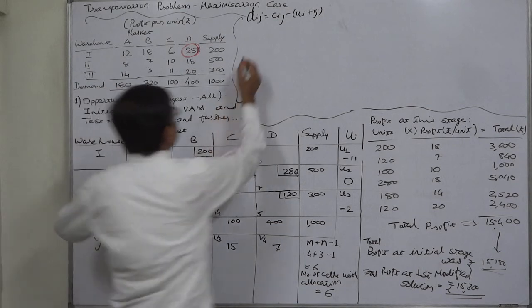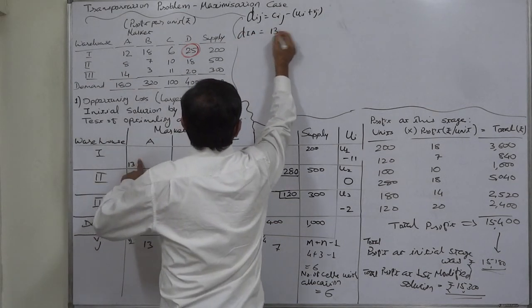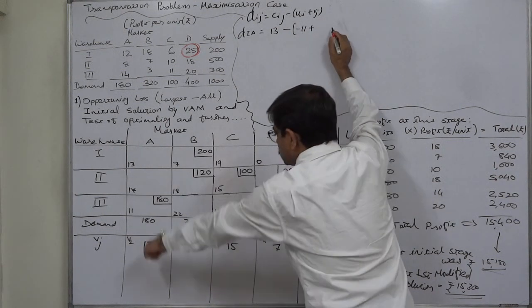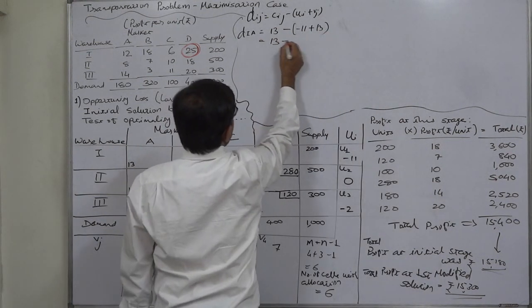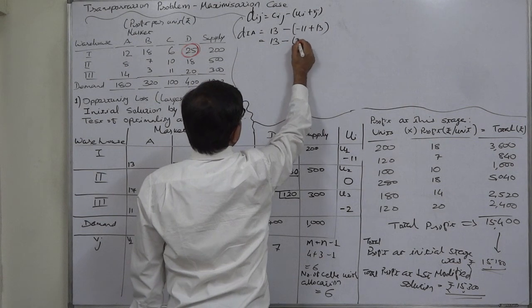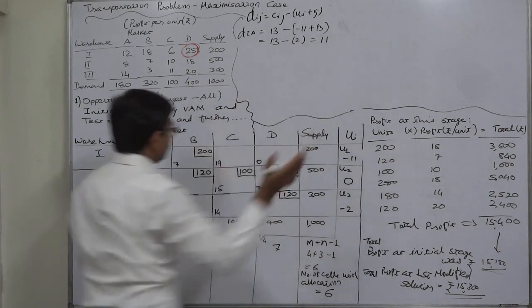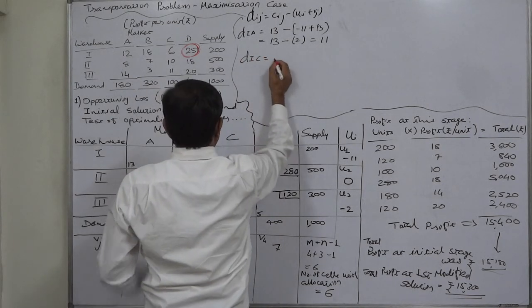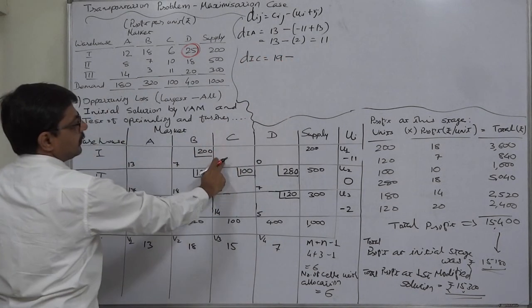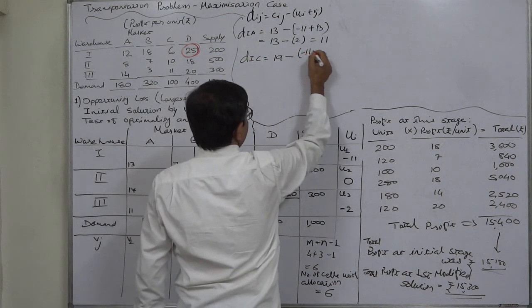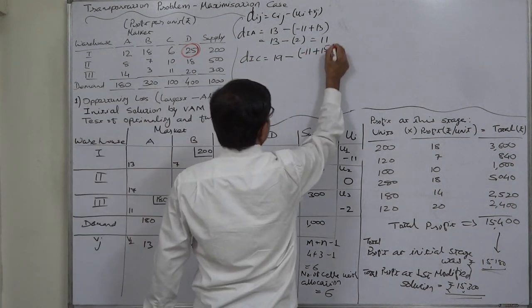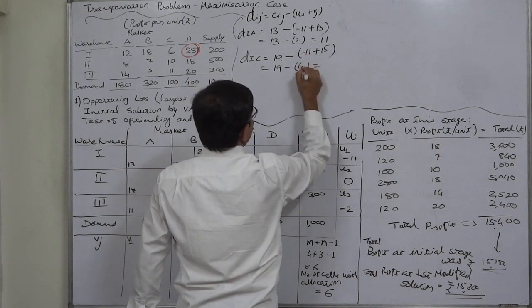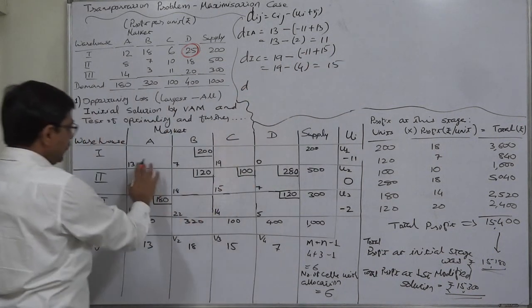First empty cell is d1a: 13 minus minus 11 plus 13, so it is 13 minus 2, that is 11, positive. D1c: 19 minus minus 11 plus 15, so it is 19 minus 4, which is 15, positive. D1d...